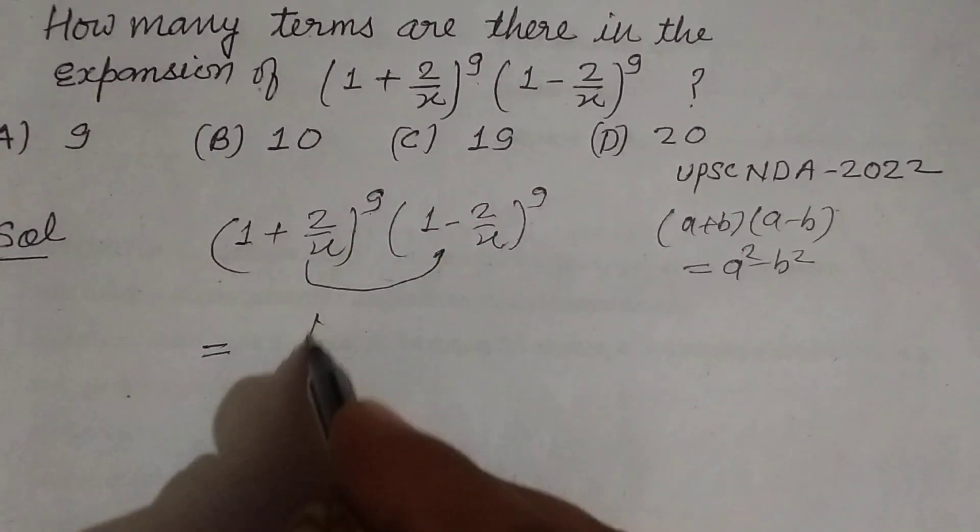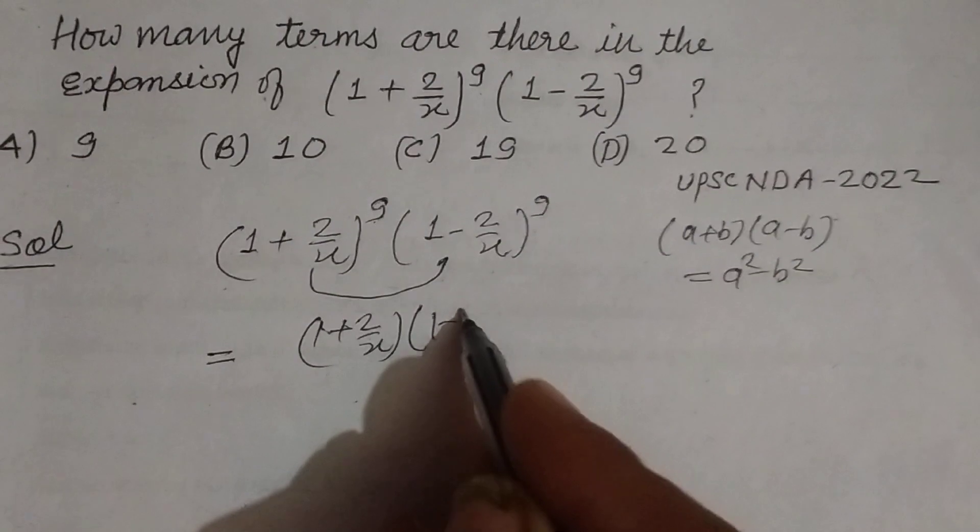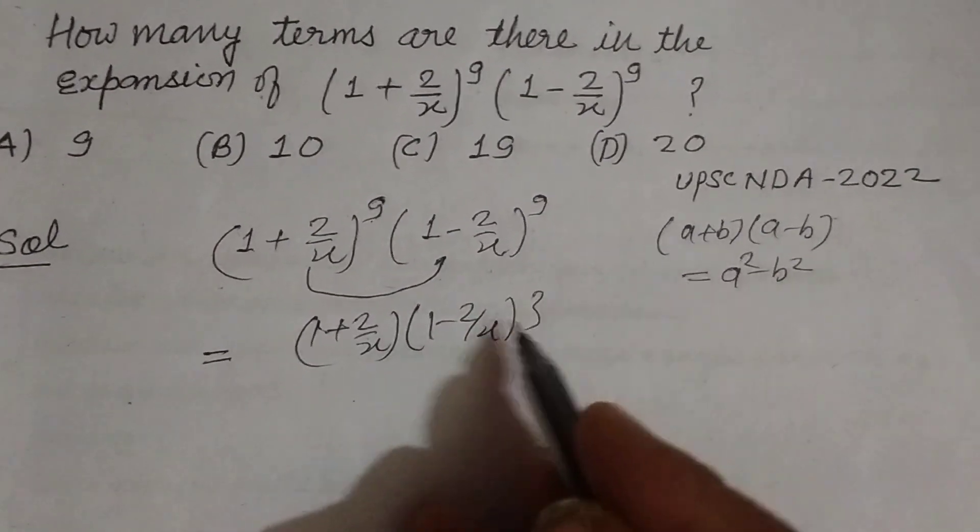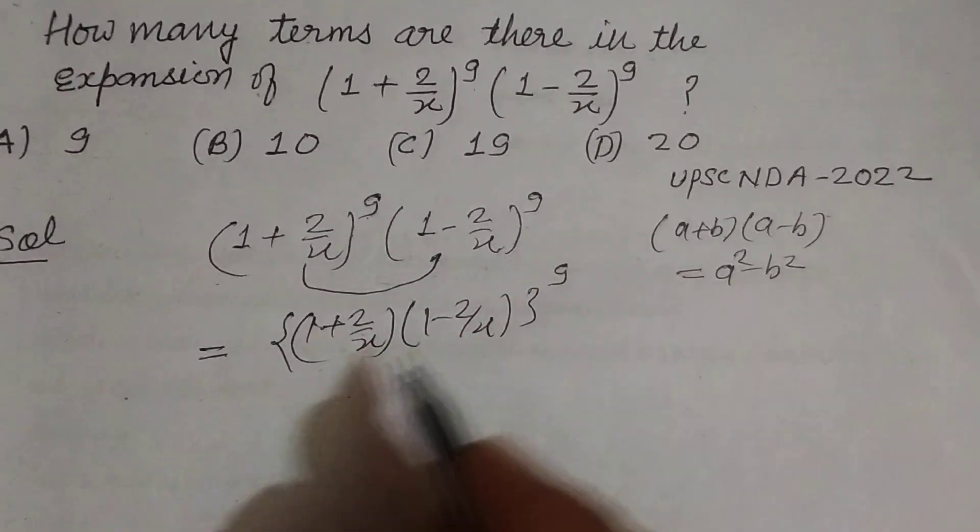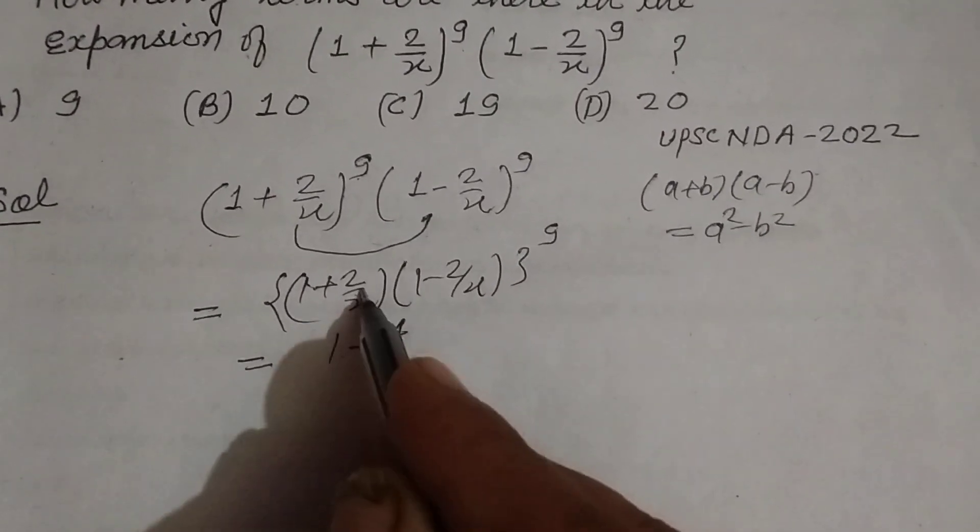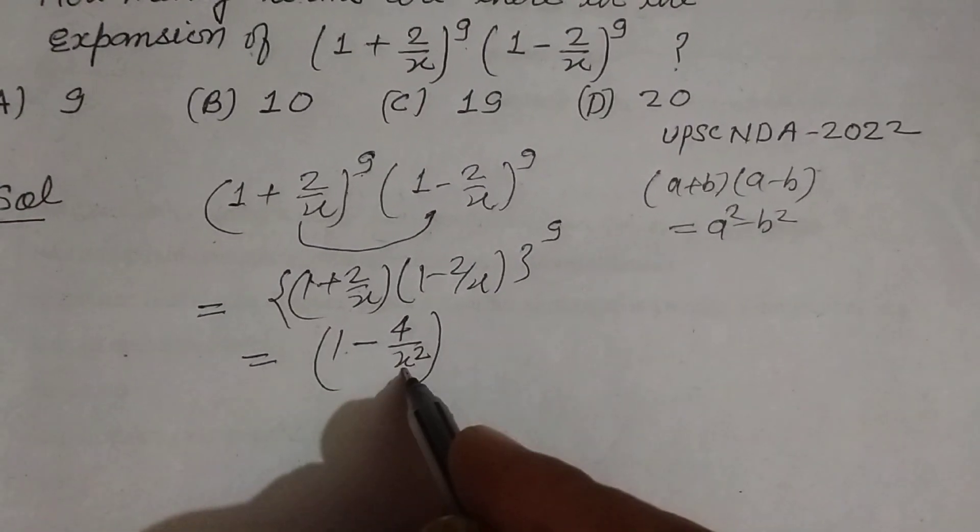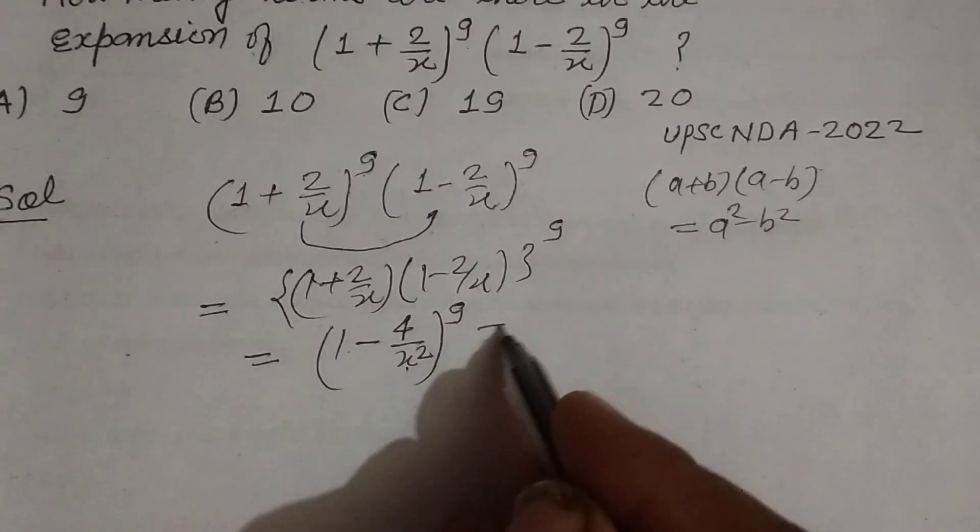So it has the same power, so (1 + 2/x)(1 - 2/x) to the whole power 9, and this becomes (1 - 4/x²)^9.